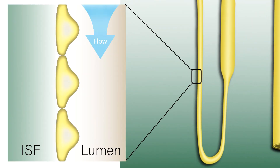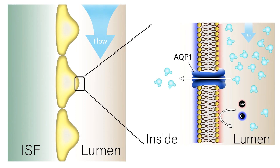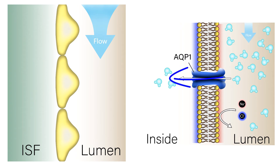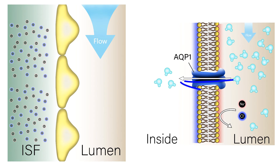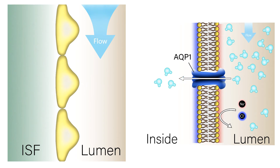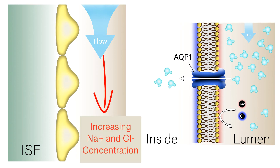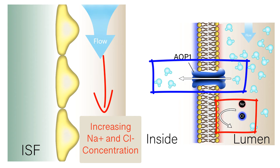The epithelial cells in the descending limb are enriched in aquaporin-1 in their apical membranes, which act as water channels allowing water to permeate the lipid bilayer. As the tubular fluid moves down the descending limb, water is drawn out by the osmotic gradient. However, because these cells lack transport proteins for sodium and chloride reabsorption, the concentrations of these solutes gradually increase as water leaves and solutes are left behind, becoming progressively enriched in the tubular fluid.